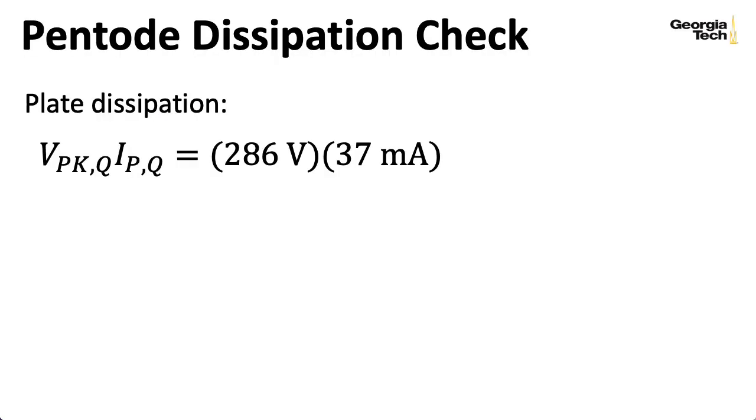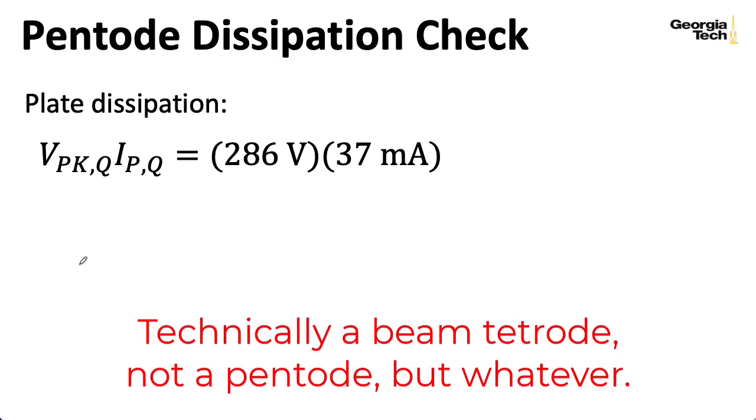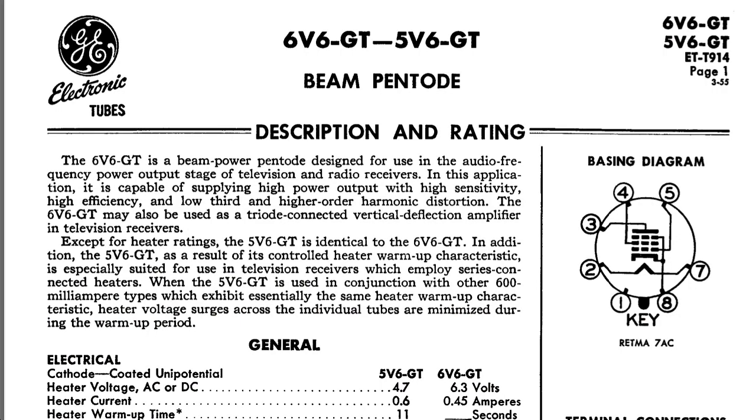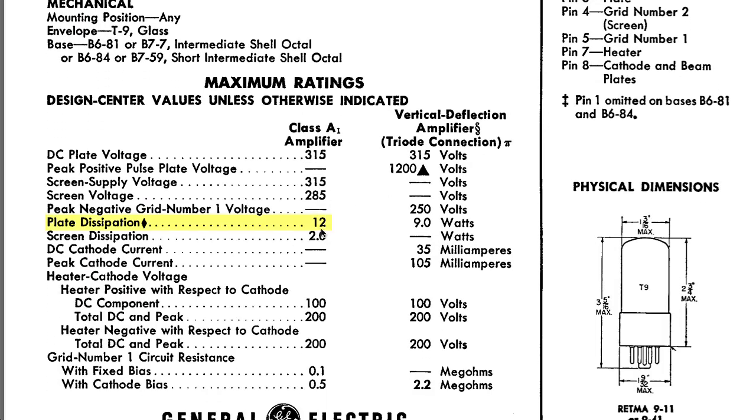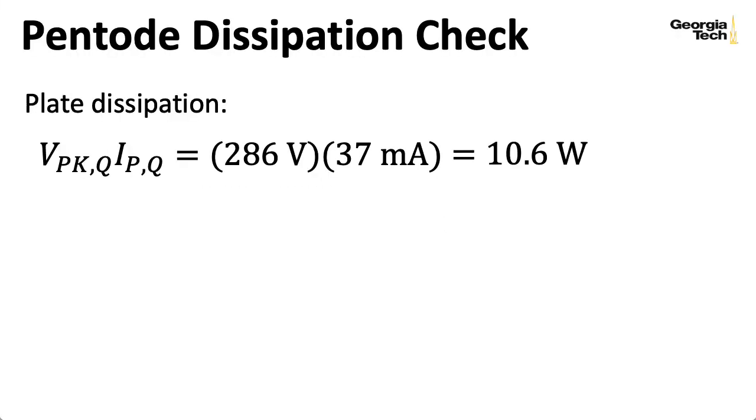While we're at it, let's make sure these bias values don't blow up our tube. If I multiply the plate to cathode voltage 286 volts by the plate current 37 milliamps, I get a plate dissipation of 10.6 watts. And let's see, checking out the data sheet, we have a maximum plate dissipation of 12 watts in this class A single-ended amplifier mode. So that 10.6 watts is less than that 12-watt limit.